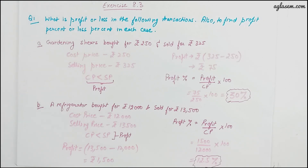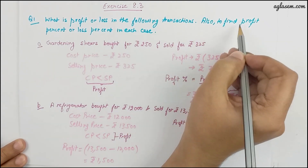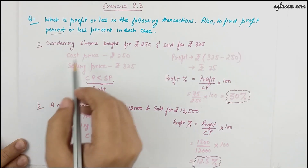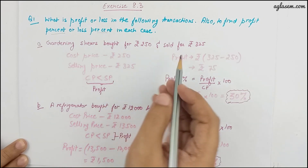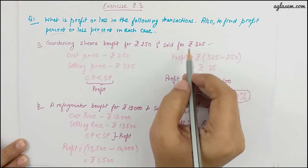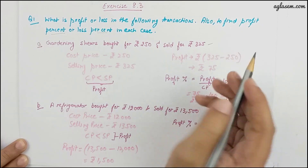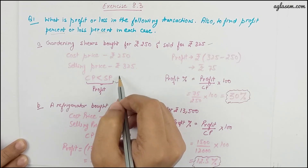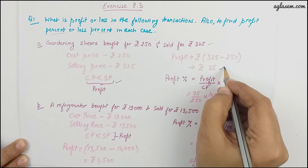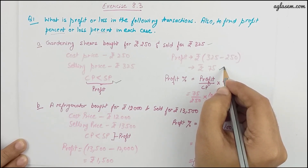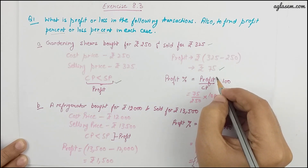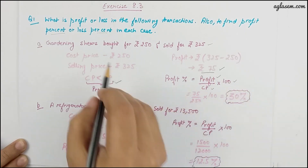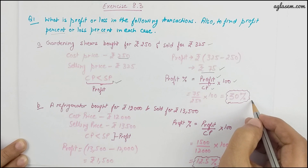Question 1 asks: what is the profit or loss in the following transactions, and also to find profit percent or loss percent in each case. Part (a): gardening shears bought for 250 rupees and sold for 325. Since the selling price is higher than the cost price, it's a profit. Profit is 325 minus 250, which is 75 rupees. Profit percent is 75 divided by 250 multiplied by 100, which gives 30 percent.